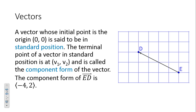Vectors. When we take a vector and move it to the origin for its initial point, we call that standard position. The terminal point of a vector in standard position is at V₁, V₂, and that's called the component form. Notice the chevrons — not parentheses, not brackets, not greater-than/less-than symbols. They are a specialized symbol for the component form of vectors.